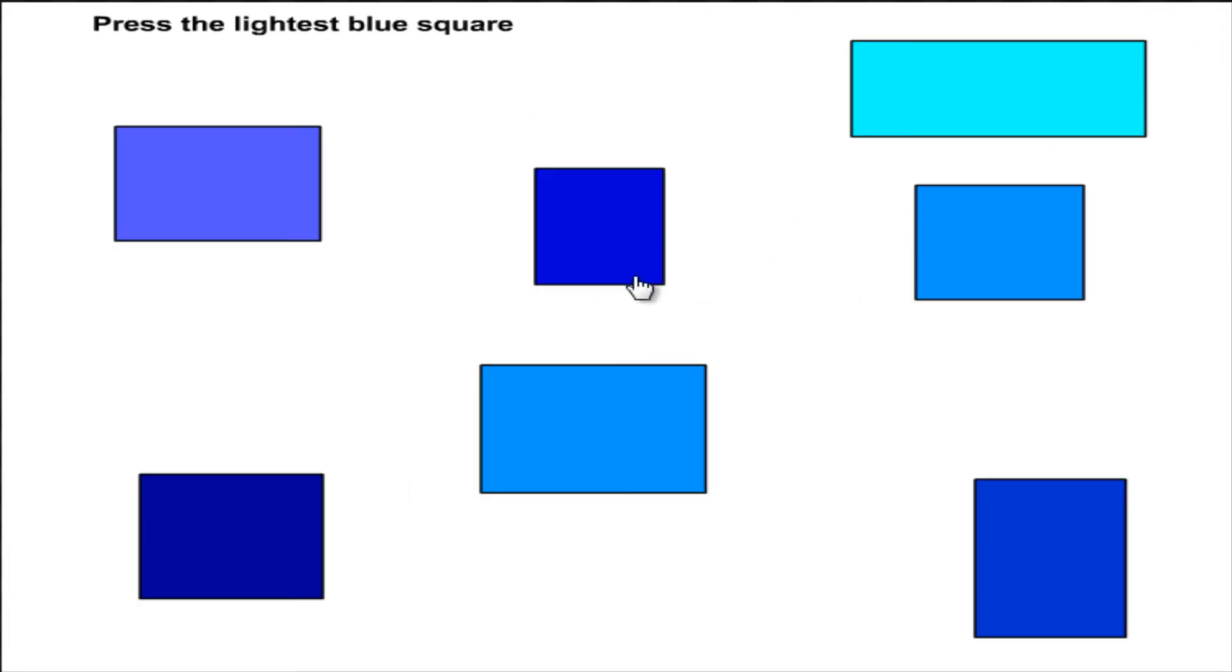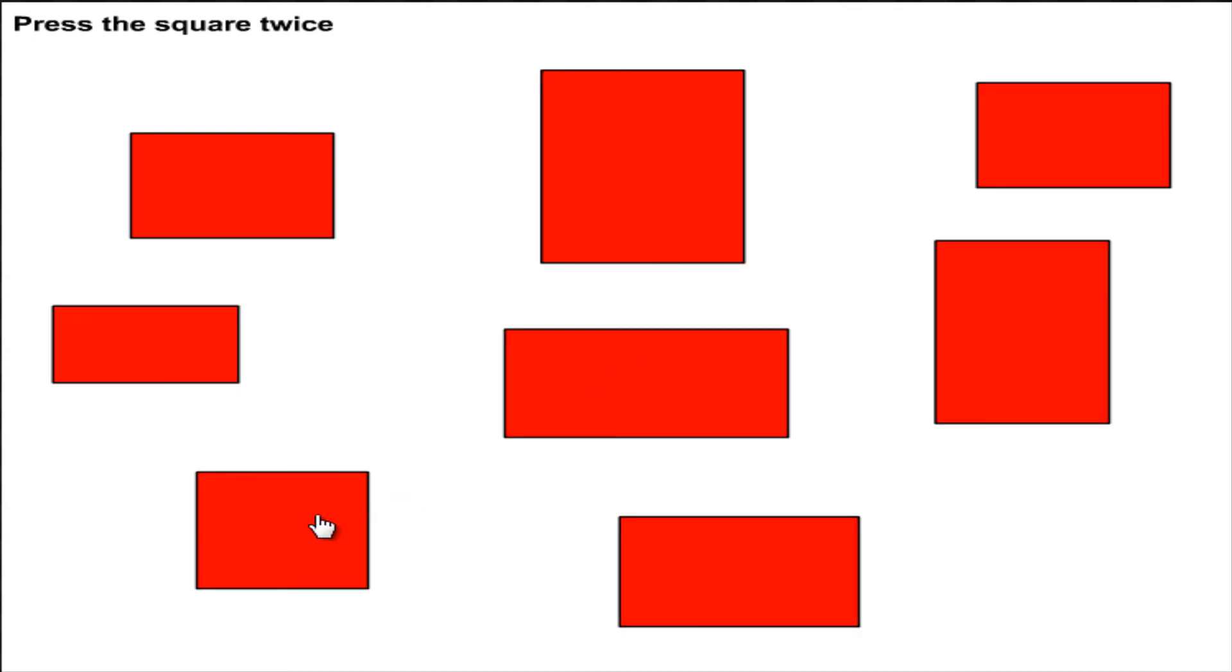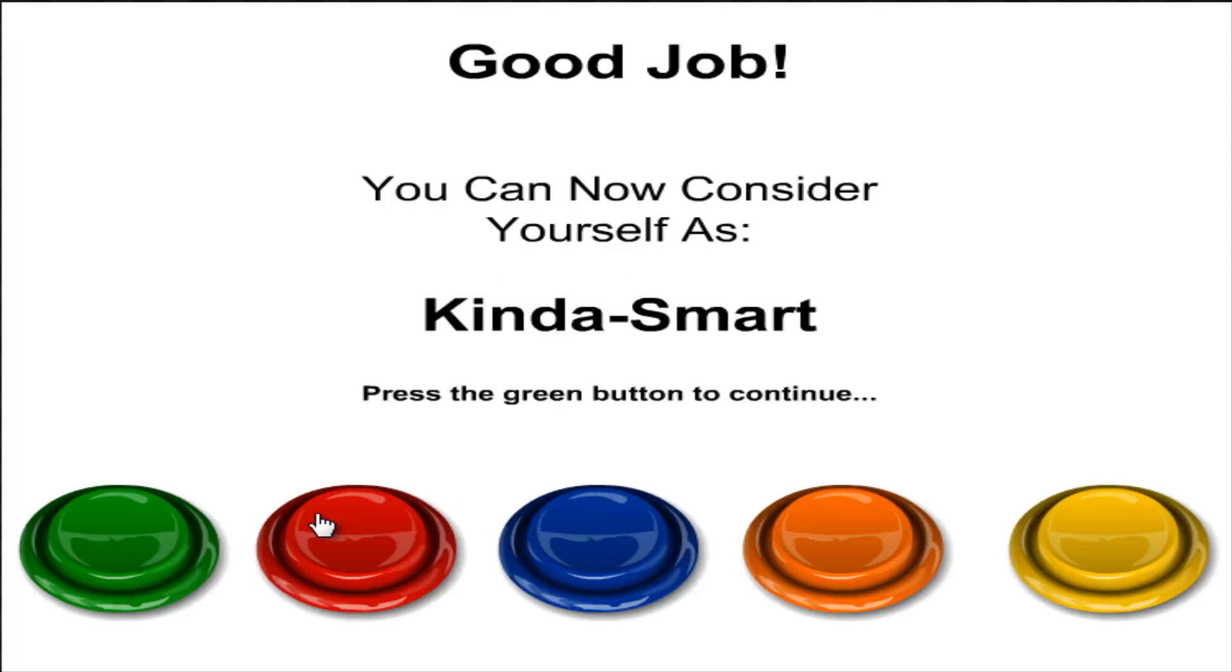This one, okay. Lightest blue square. All right, so we can narrow it down. These two are squares, so it must be this. Okay. Press the square twice, this is a square and this is a square. Don't press the green button. Okay, I'm not gonna press the green button, just as you asked for. Oh, I'm kind of smart, guys, we're making progress here. See, who needs school? I can just go on Addicting Games and then go to the idiot test.